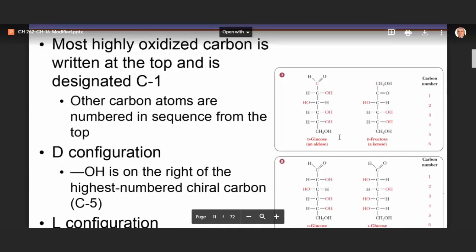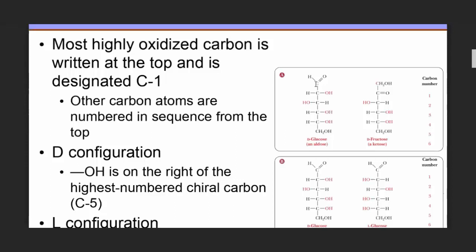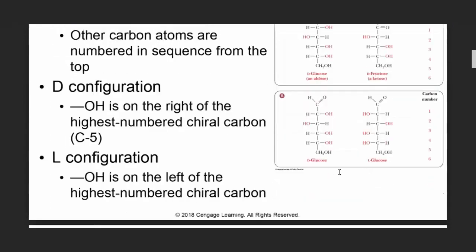This is the structure for D-glucose — it is an aldose. And here we have D-fructose, which is a ketose. Both are hexoses, but they differ in the functional group. The most highly oxidized carbon is written at the top and designated number one, then you go all the way down. To determine whether a sugar is D or L configuration, we look at the chiral carbon with the largest number and observe the OH: if it is to the right, it is D; if it is to the left, it is L.